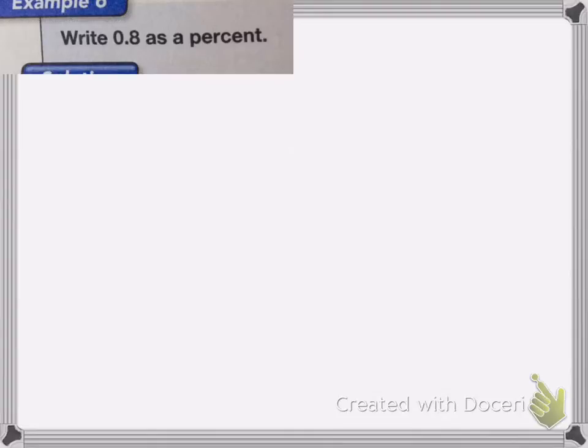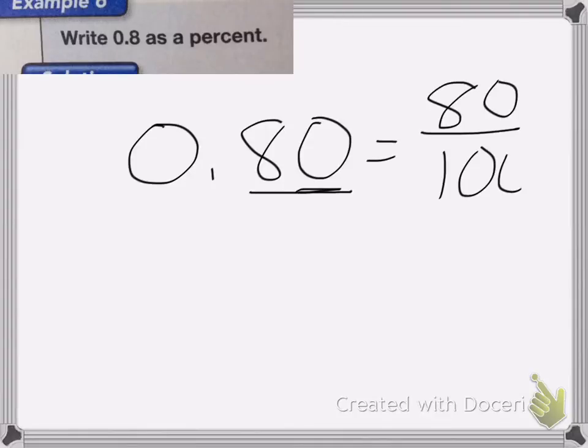Okay, this one is a little trickier. We have 0.8 and I need to write this one as a percent. Well, if I change this number to a fraction, it would be 8 tenths. But there's an easier way to do this, and I'll just be adding a 0 into my hundredths place. So this gives me 80 hundredths, same as 80 hundredths, which I can just say is 80%.